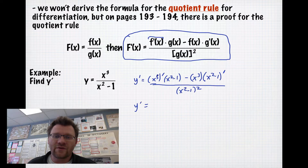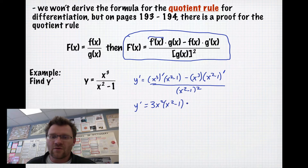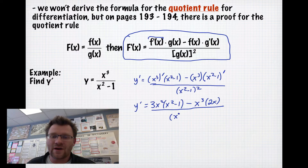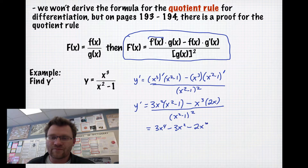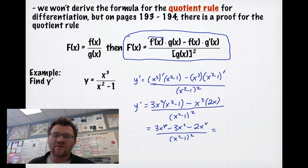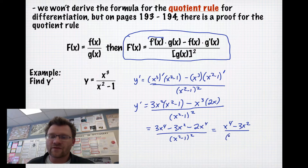The derivative of x cubed is 3x squared. We still have x squared minus 1, and we still have x cubed multiplied by 2x, because the derivative of x squared minus 1 is 2x. That's all over x squared minus 1 squared. Multiplying the top together and combining like terms, we get 3x squared times x squared, which is 3x to the fourth, minus 3x squared, minus 2x to the fourth, all over x squared minus 1 squared. That leaves us with x to the fourth minus 3x squared, all over x squared minus 1 squared.